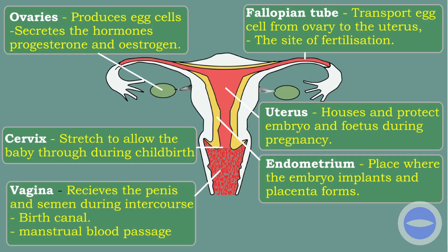The function of the vagina is to receive the penis and semen during intercourse. Semen is a liquid that contains sperm cells. The vagina is also a birth canal — as a woman gives birth, the baby passes through the vagina. Another function is menstrual blood passage: if there was no fertilization, the endometrium breaks down and its blood passes through the vagina.